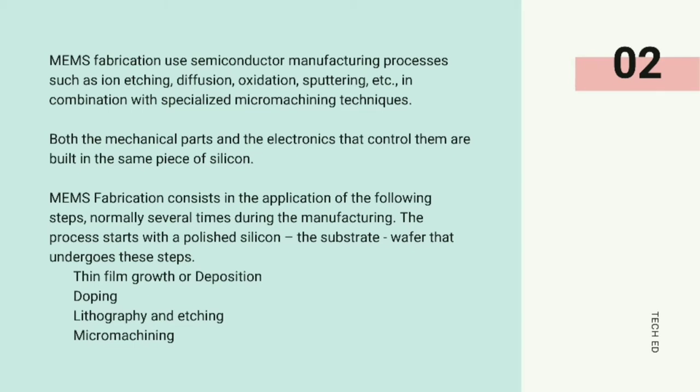MEMS fabrication consists in the application of the following steps, normally several times during the manufacturing. The process starts with a polished silicon substrate wafer that undergoes steps such as thin film growth or deposition, doping, lithography, etching, and micro-machining.